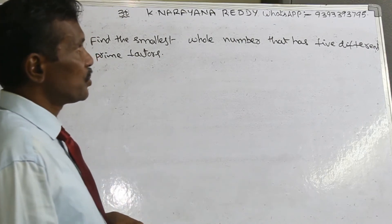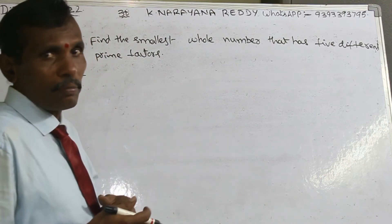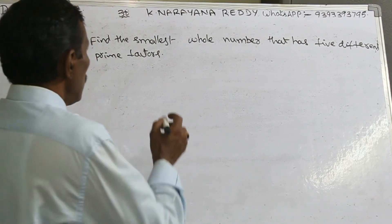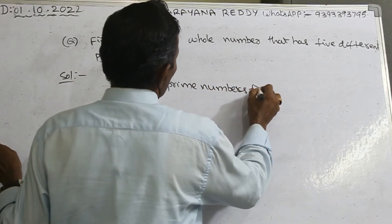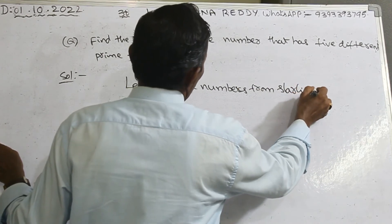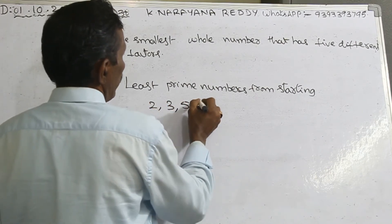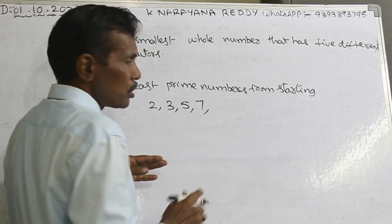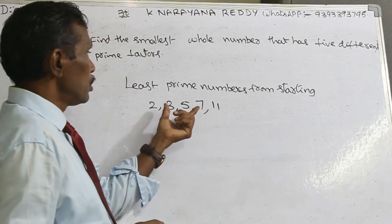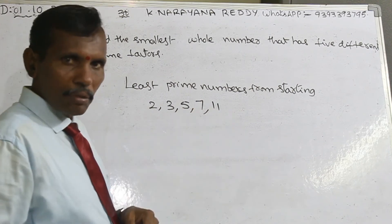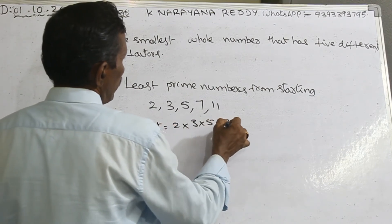Some competitive exams can have this question: find the smallest whole number that has 5 different prime factors. We want to find the least prime numbers from the start. The least prime numbers starting from the beginning are 2, 3, 5, 7, 11. Numbers like 8, 9, 10 are not prime — those are composite. So the first 5 prime numbers are 2, 3, 5, 7, and 11. What is their product? 2 times 3 times 5 times 7 times 11.